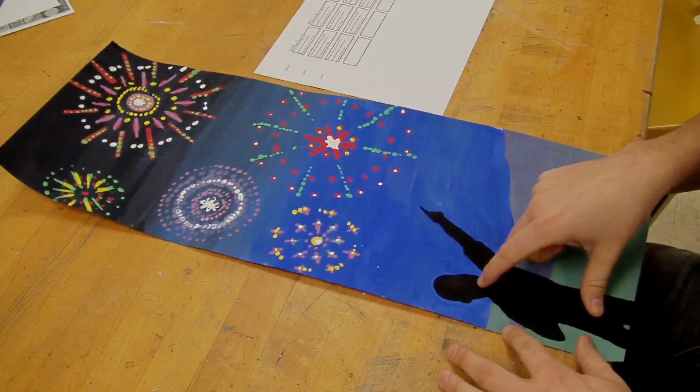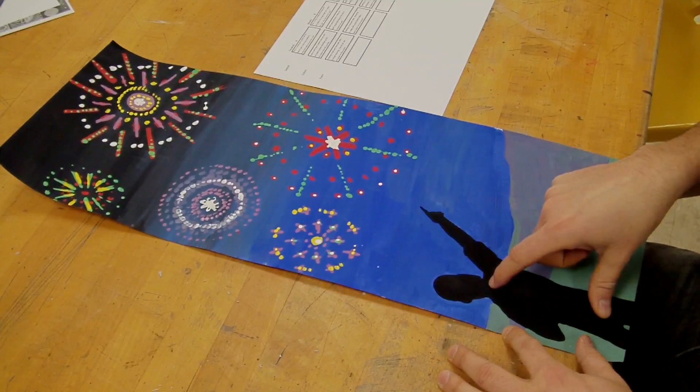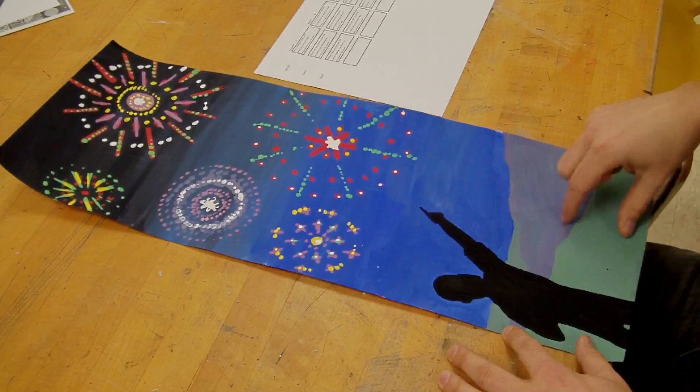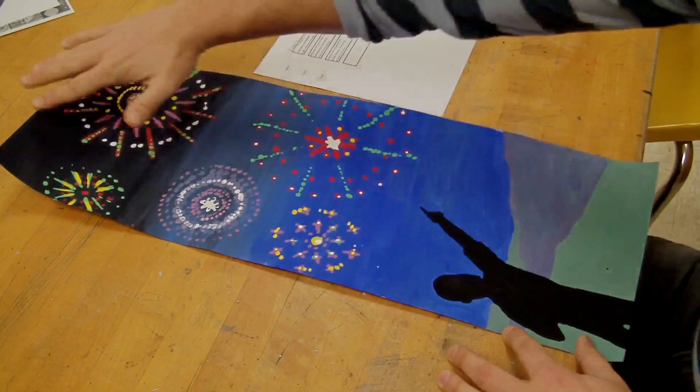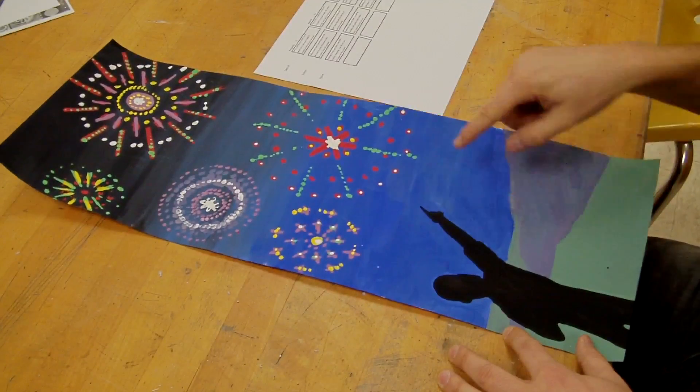So I've got a foreground here. I've got my guy way up close. I've got my middle ground, which is this stuff right here. And then I've got my background, which is this right here, this little sliver and then all this.